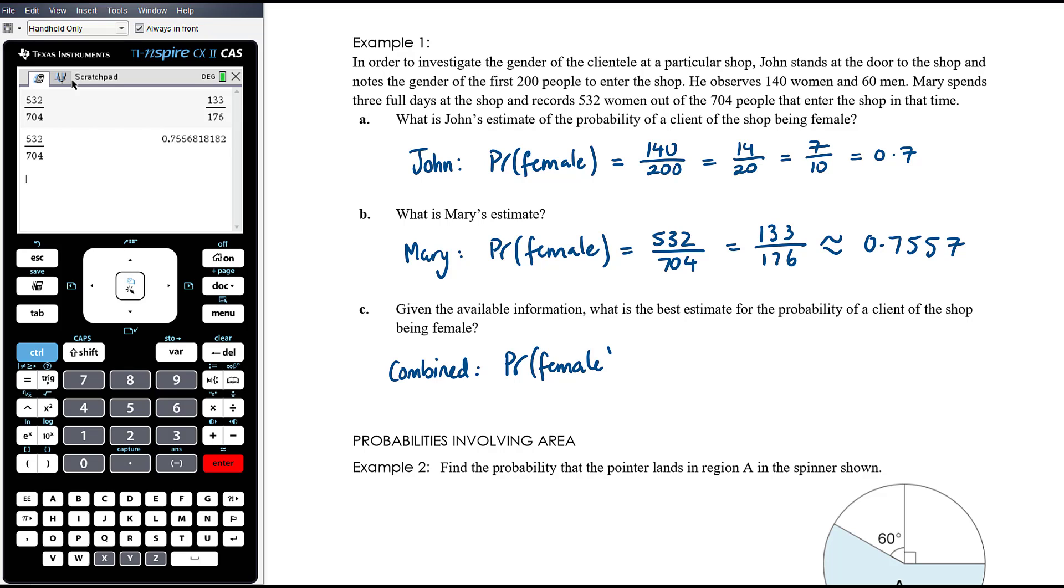So there's probably some more information required here, but I'm going to go with we've got 140 plus 532 women out of 200 plus 704 observations. So 140 plus 532, that's 672 out of 904, which simplifies to 84 on 113.